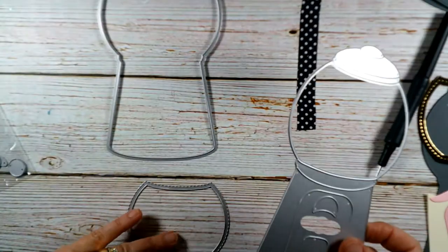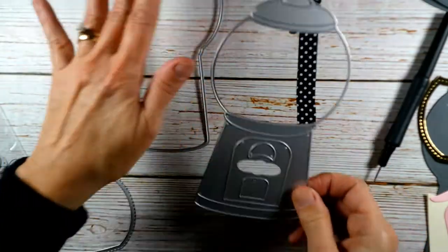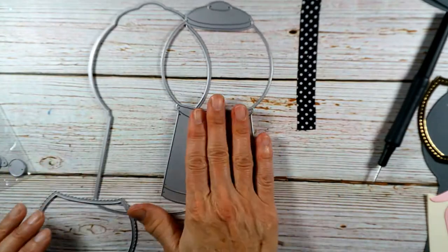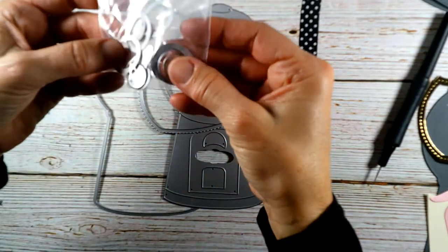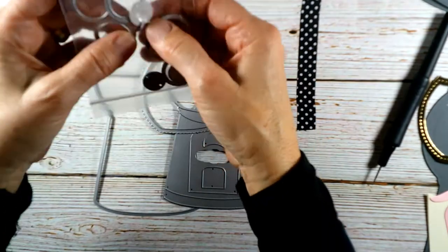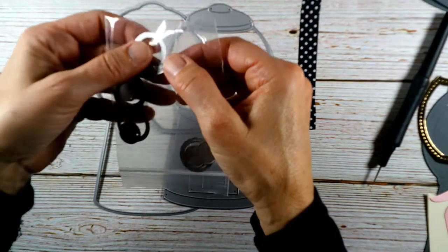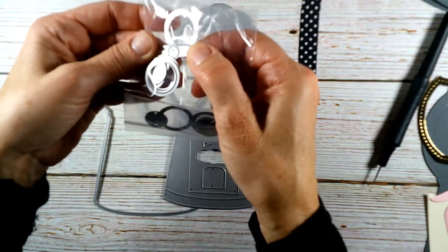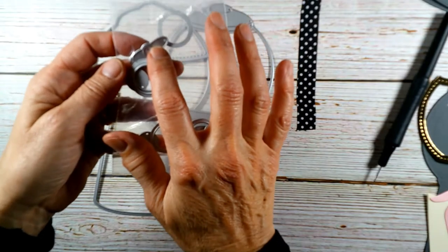When you purchase the Gumball Foldit, what you get is this big die, this die, this little piece, and then a couple of circle dies, and a little lever to turn the gumball handle. I'm not going to use the circles, but I will use the little lever.